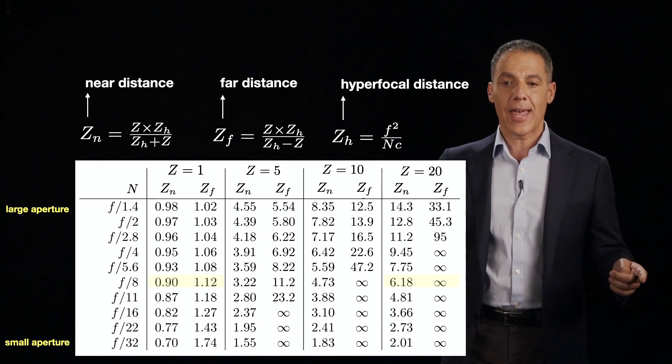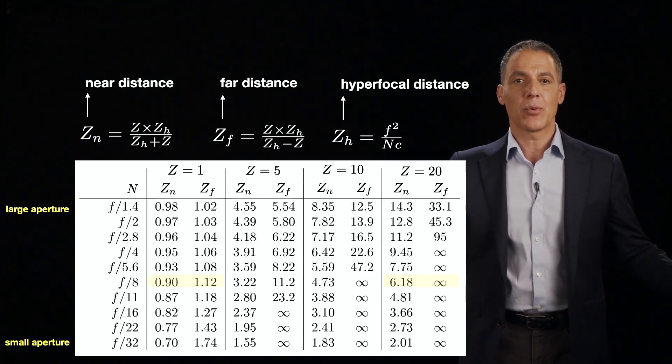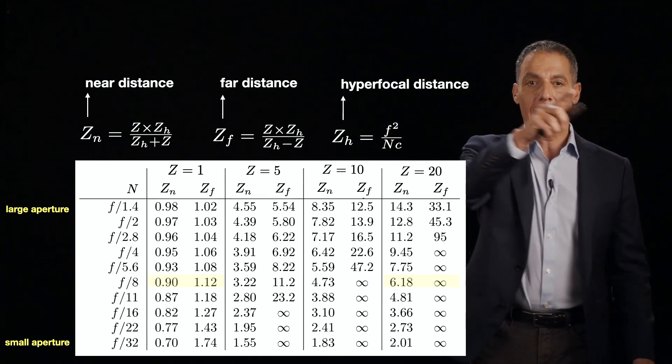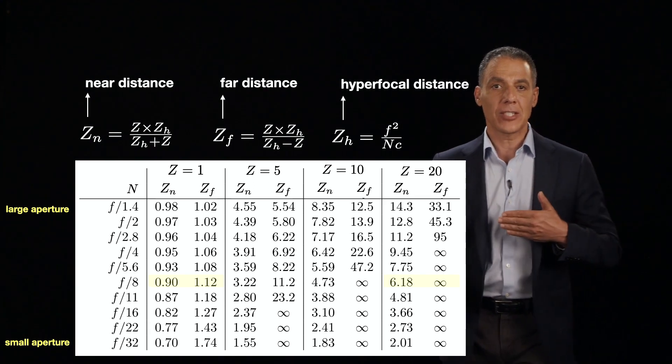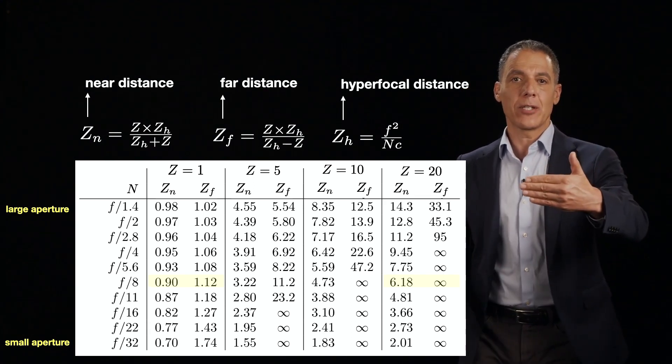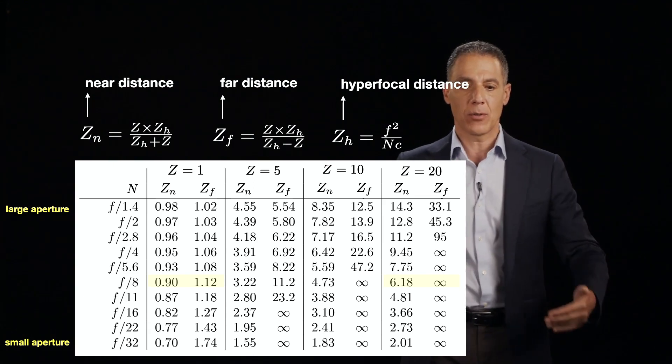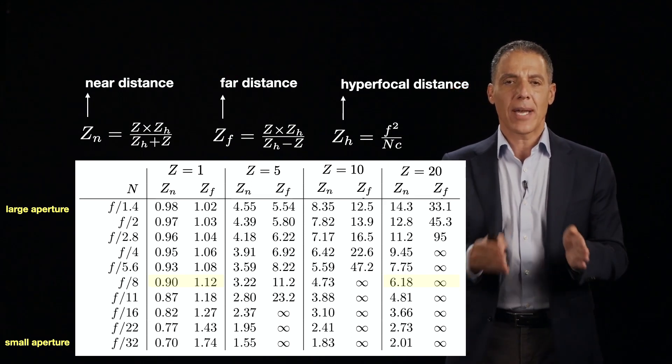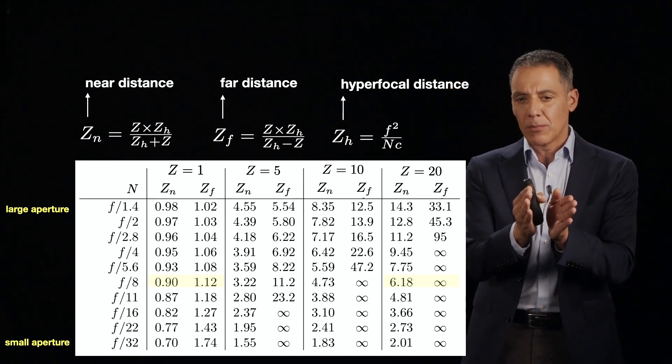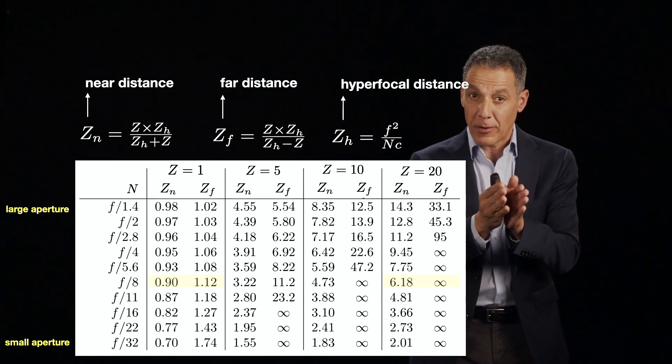Similarly, notice that the depth of focus depends on how far the subject is. So here, for example, with a fixed F-number of F over 8, then at a distance of Z equals 20, I've got a pretty wide field of view. I'm from 6 meters through my 20 meter focus point all the way out to infinity. Fantastic. Really wide depth of focus. But it's something nearby at Z equals 1. Well, then my depth of focus is only 1 meter, 0.9 meters to 1.1. Very, very narrow.